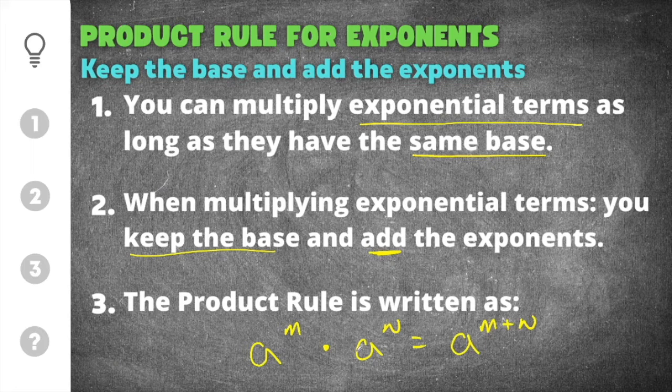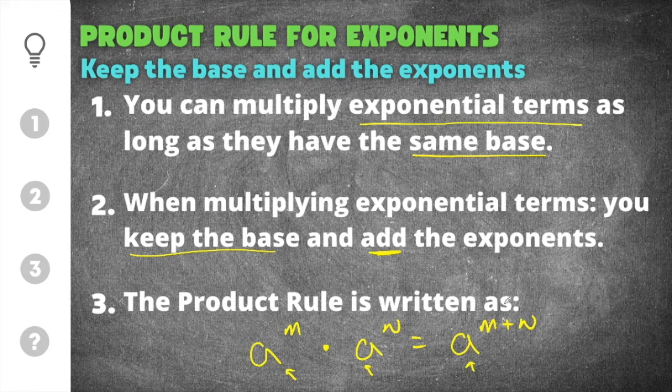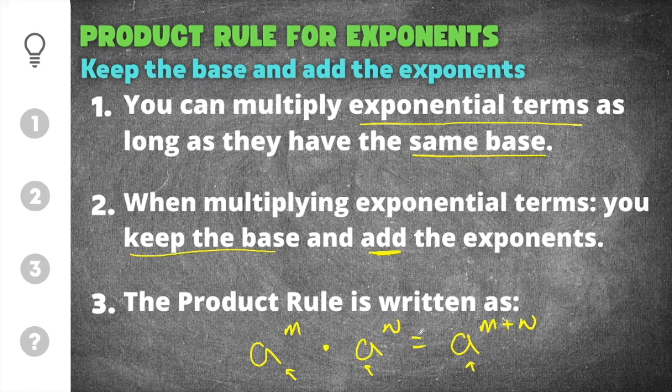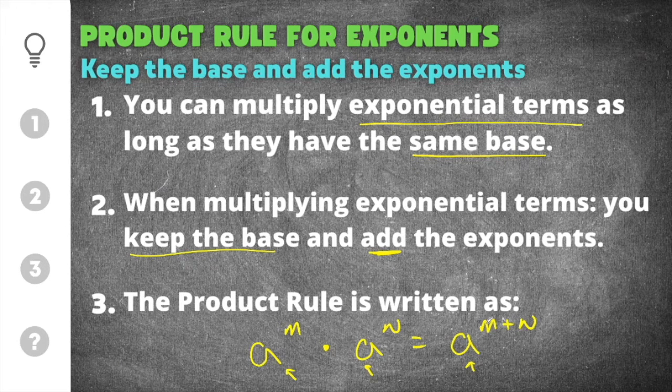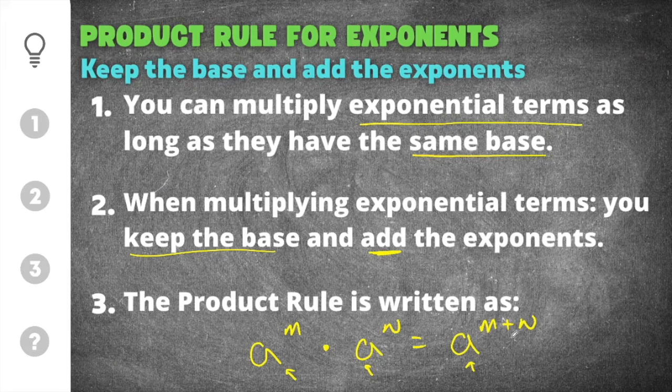So you can see what that means is you're going to keep the base, you're going to keep the a the same, so the a stays the same in all of these, and then for the exponents, whatever the exponents are, are going to be added together. So if m is five and n is three, you would do five plus three for the answer.